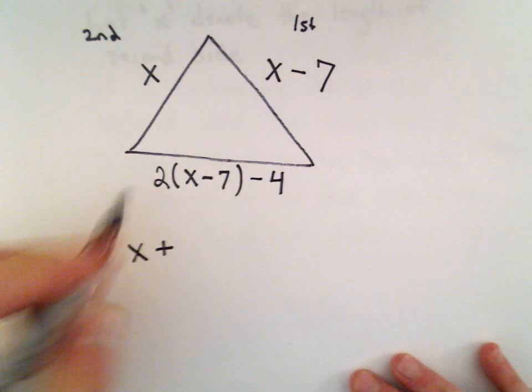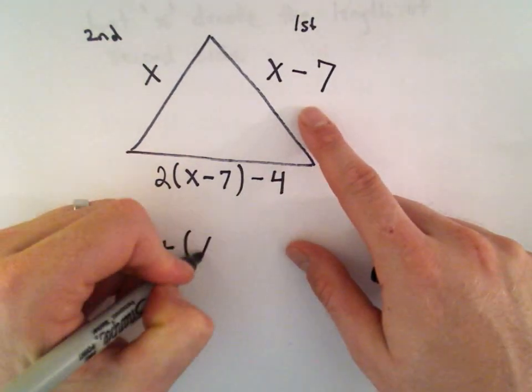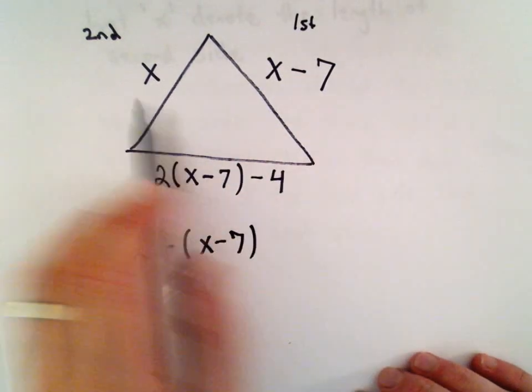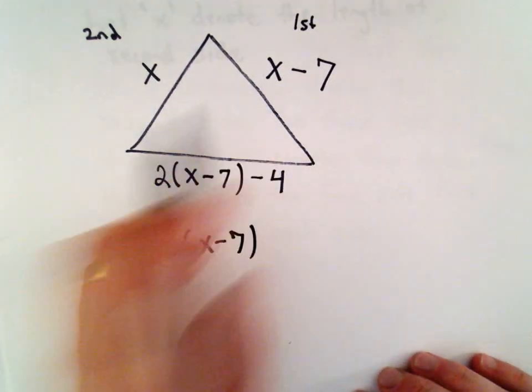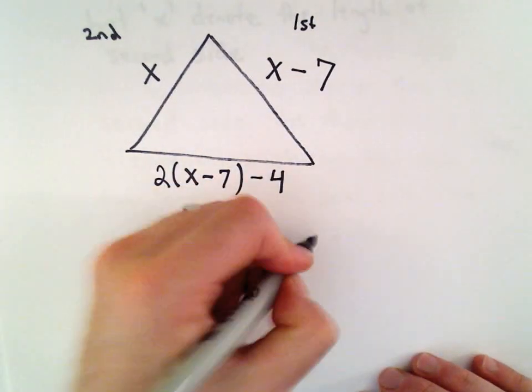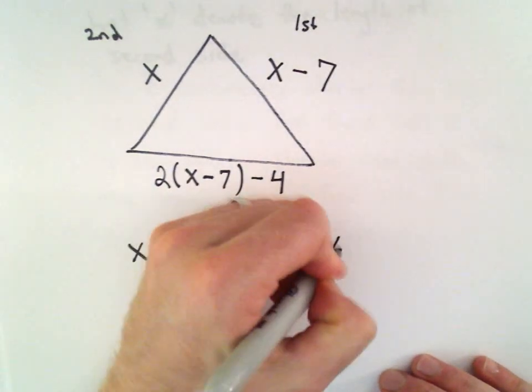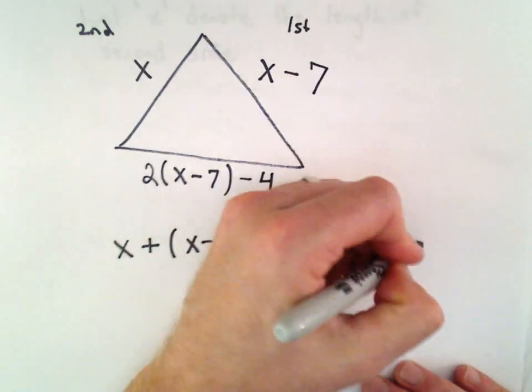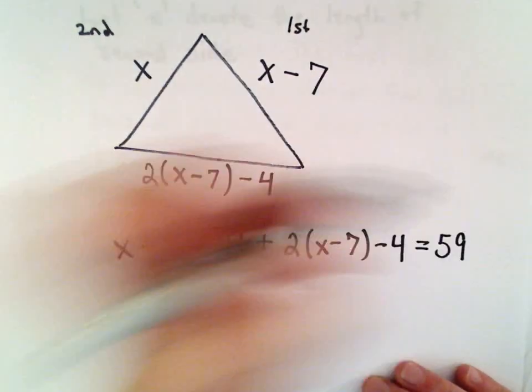If we take the length of the first side plus the length of the second side, we'll take the length of the top two sides and add to it the length of that bottom side. And we said that equals 59.